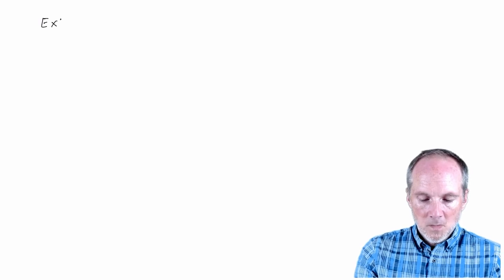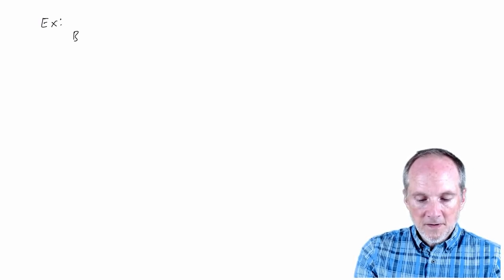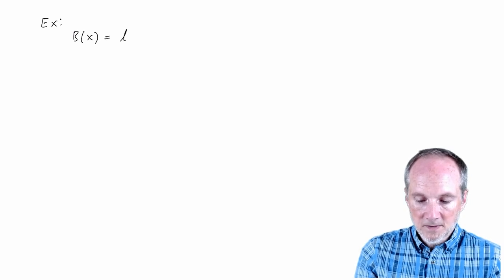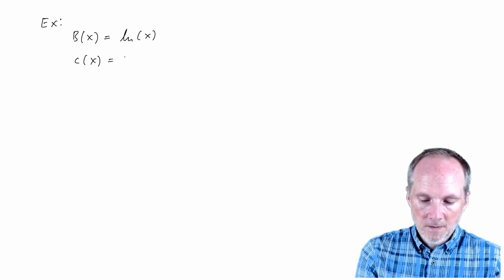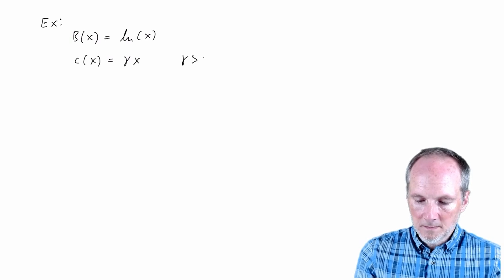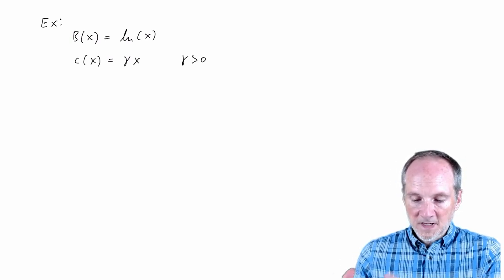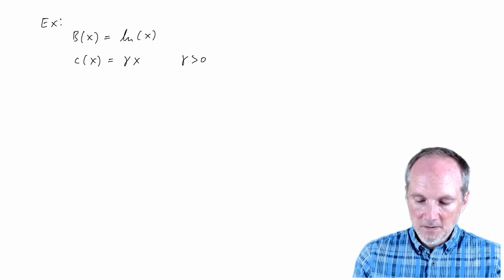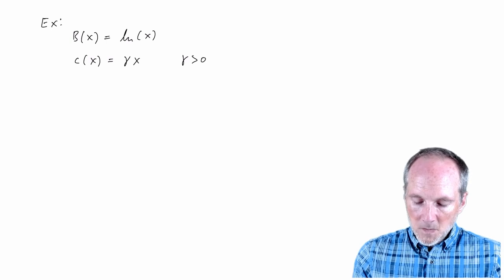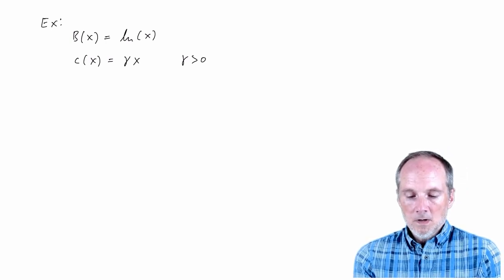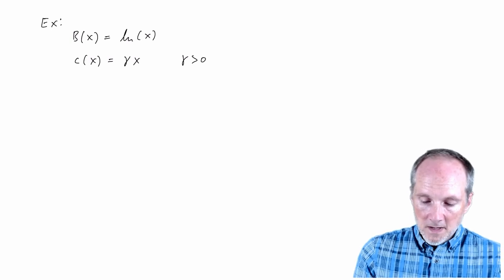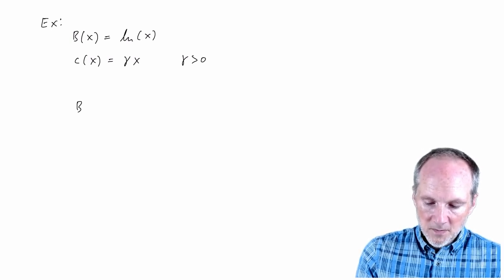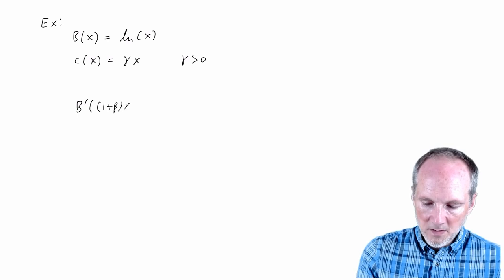So in this example, let's assume that the benefit function is just the natural log function. And let's assume that the cost function is linear. So here gamma, that's the Greek letter gamma, that's just some fixed parameter and we'll assume that it's strictly positive. So that's a cost parameter. All right, so we have this equation that characterizes the equilibrium activity level, and that was the following. It was b prime of 1 plus beta x bar equal to c prime x bar.